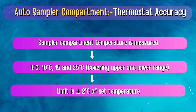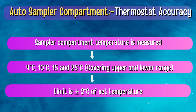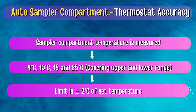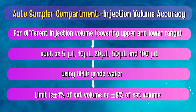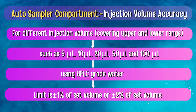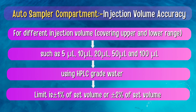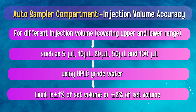For the Auto Sampler Compartment, Thermostat Accuracy is performed by measuring the sampler compartment temperature at 4°C, 10°C, 15°C, and 25°C. The limit is ±2°C of the set temperature. For Injection Volume Accuracy, different injection volumes are tested such as 5 µL, 10 µL, 20 µL, 50 µL, and 100 µL using HPLC grade water. The limit is ±1% or ±2% of the set volume, depending upon the make of the HPLC.